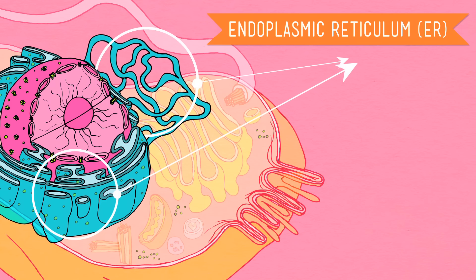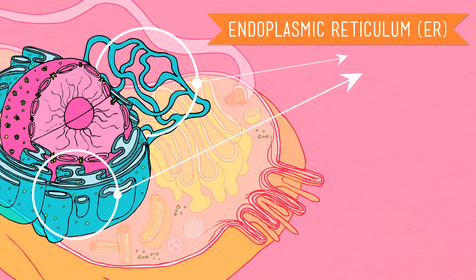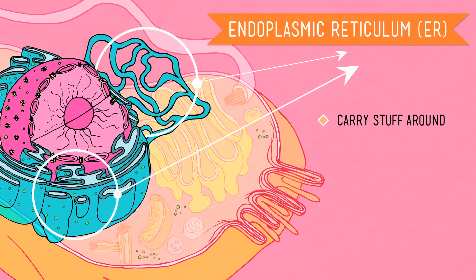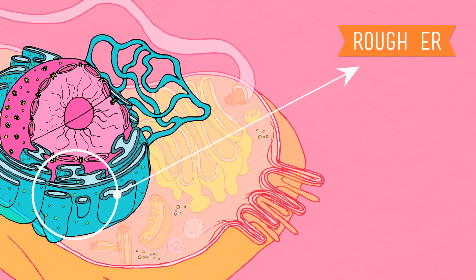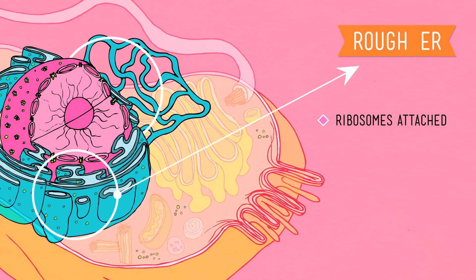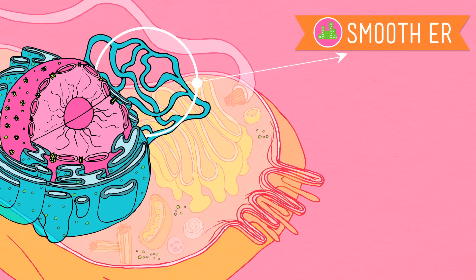The endoplasmic reticulum, or just ER, are organelles that create a network of membranes that carry stuff around the cell. These membranes are phospholipid bilayers, same as in the cell membrane. There are two types of ER. There's the rough and the smooth. Fairly similar, but slightly different shapes, slightly different functions. The rough ER looks all bumpy because it has ribosomes attached to it, and the smooth ER doesn't, so it's a smooth network of tubes.